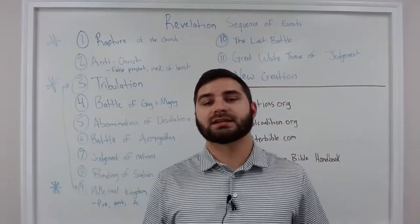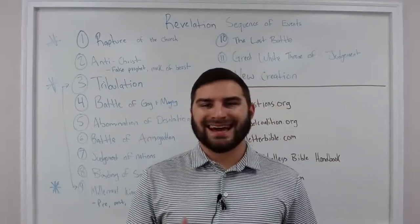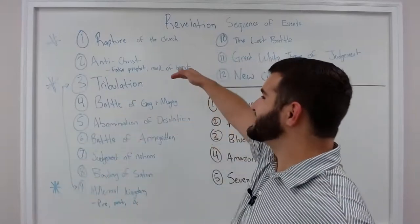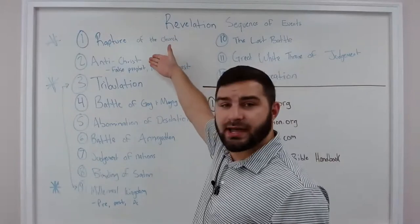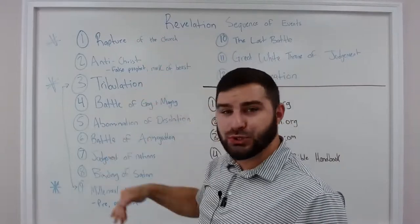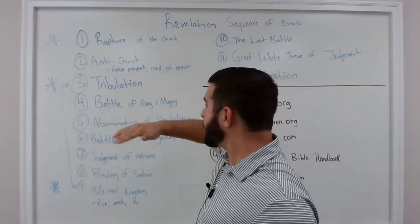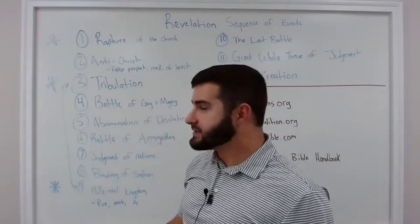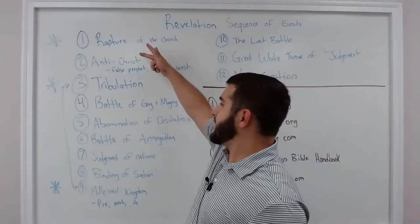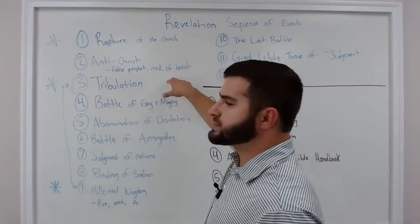Now this calls for wisdom that the one who has understanding calculate the number of the beast for it is the number of a man and his number is 666. And so right there we see that the number 666 is referring to a man. Mark of the Beast is identifying those who are following and are worshiping the Antichrist. During the end times, at some point, the Antichrist is going to rise up and he's going to deceive people. He's going to be allowed to do things that deceive multitudes of people and they worship him. They are worshiping the Antichrist instead of Jesus.